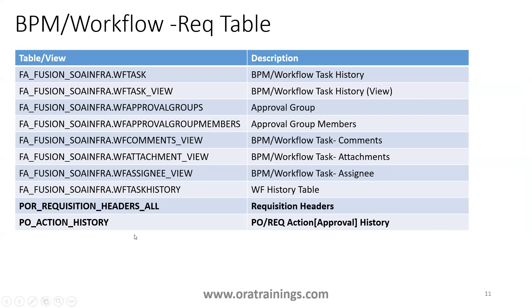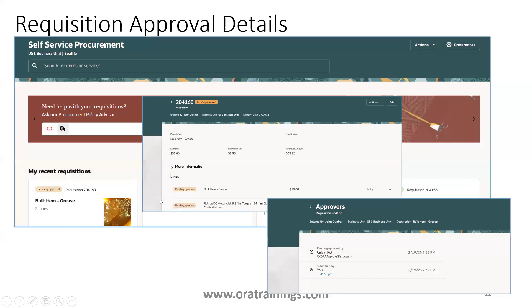From the backend, there are a couple of key tables. The main one is the Workflow Task History table. Another important table is the PO Requisition Headers table, which is the base table where the requisition gets stored. The PO Action History table contains information about the requisition action history — when it was submitted, with whom it is pending, and to whom it was assigned. You can also retrieve an identification key from the Action History table.